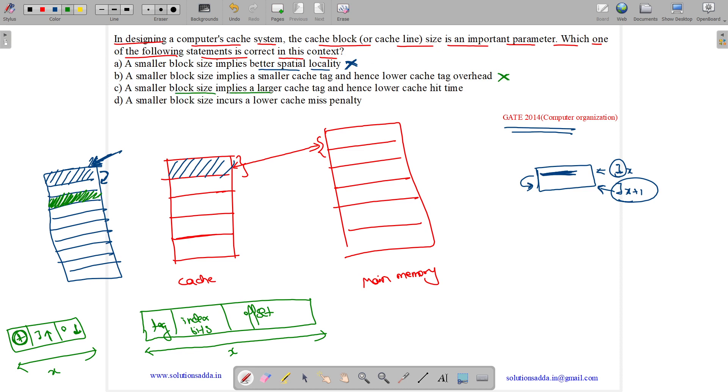A smaller block size implies a larger cache tag and hence lower cache hit rate. As I have already explained, tag won't be affected.